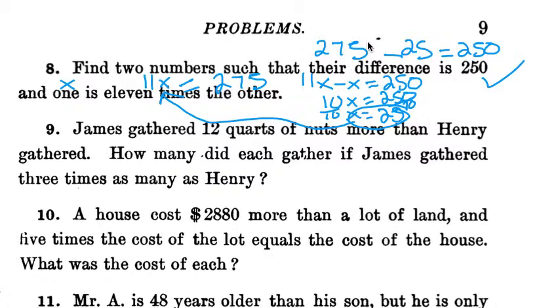Number nine: James gathered 12 quarts of nuts more than Henry gathered. How many did each gather if James gathered three times as many as Henry? We're going to find the person that we know the least amount about, which is Henry. So we're going to make that our variable x for Henry. James gathered 12 more than Henry, so that can be x plus 12.